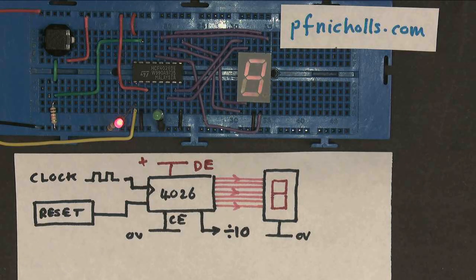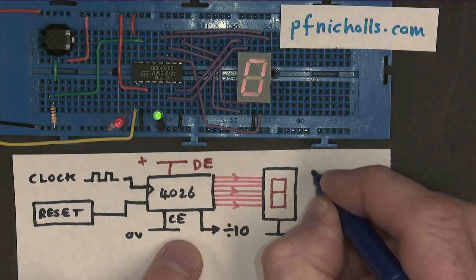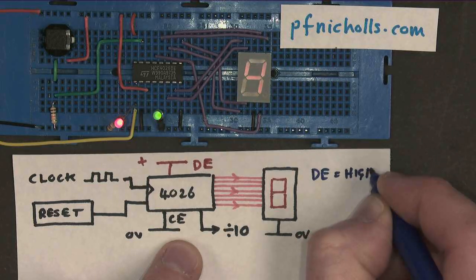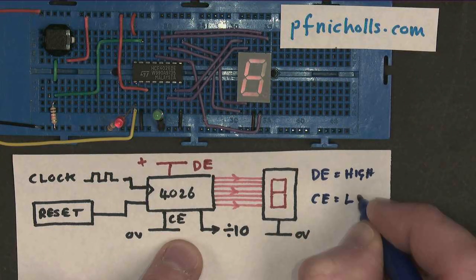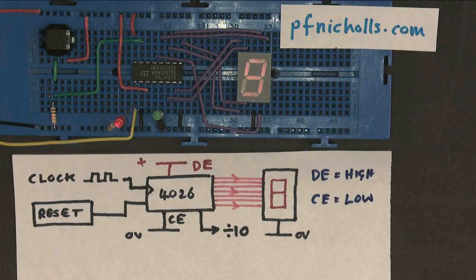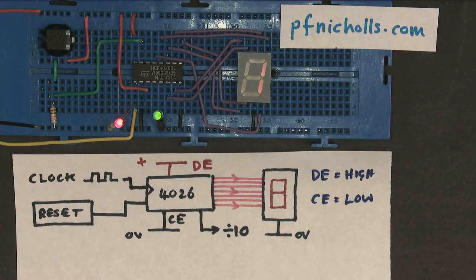So I can keep working now. You want the display enable to be high, and the clock enable to be low. And that will make you a counter. Drive the display, and count from 0 to 9.